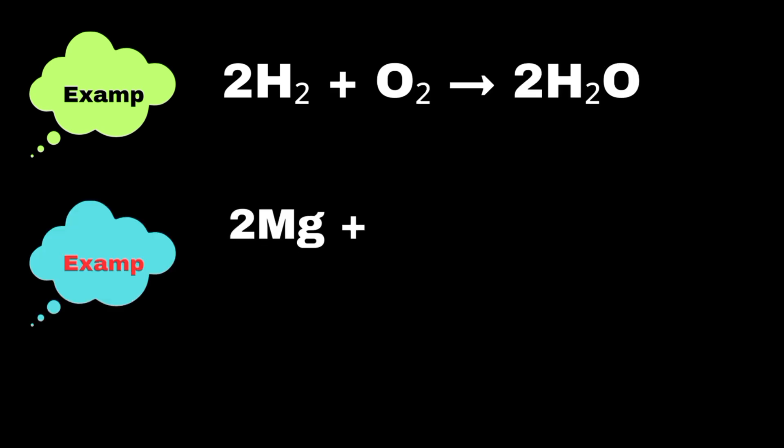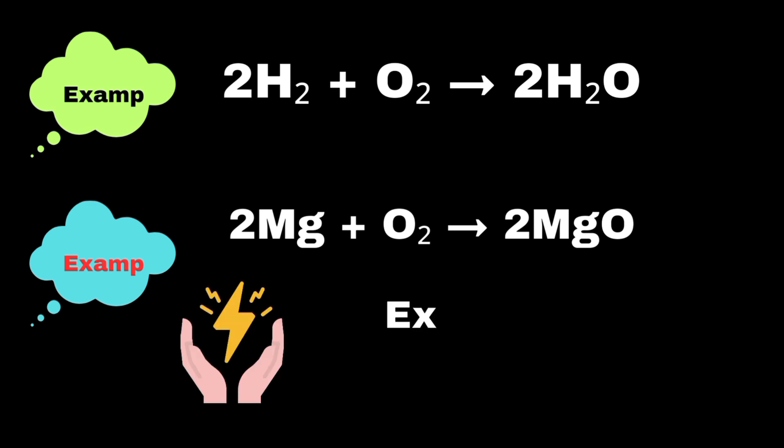Another example is when magnesium burns in the presence of oxygen to form magnesium oxide. These reactions often release energy in form of heat or light, making them exothermic.